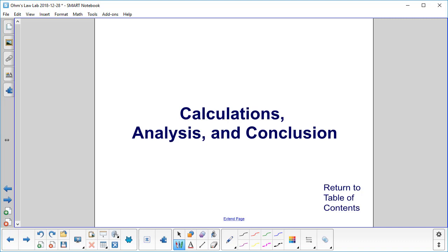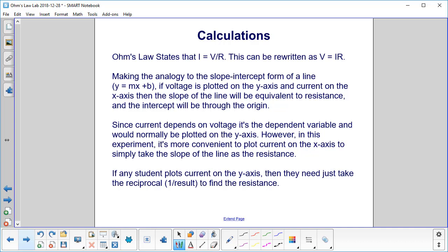Calculations, Analysis, and Conclusion. Ohm's law has I equal to V over R, which we're going to rewrite as V equals IR.